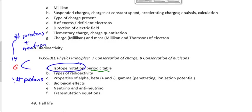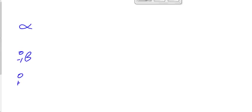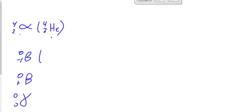We talked about three types of radioactivity: alpha decay, beta decay — which consists of beta minus and beta plus — and gamma decay. An alpha particle is exactly the same thing as a helium nucleus. Beta minus is exactly the same as an electron. Beta plus is a positron, the antiparticle of an electron. And gamma is a gamma ray.